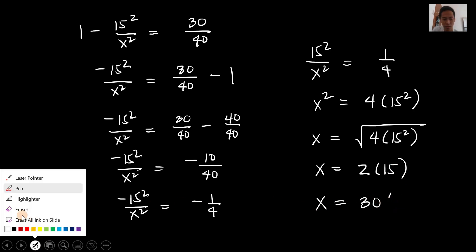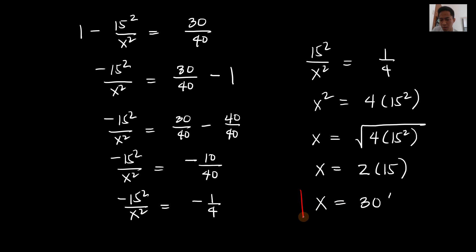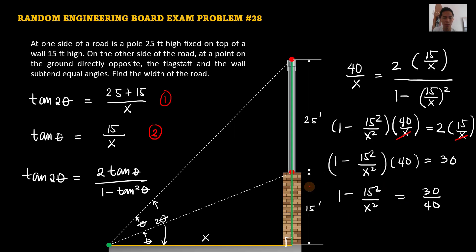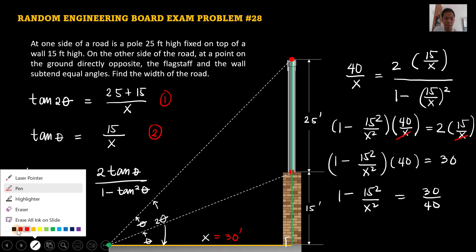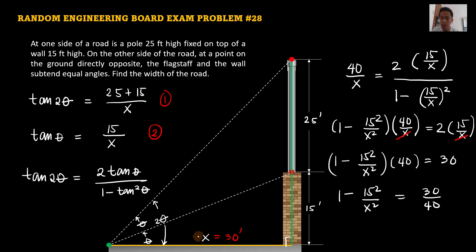So x equals 30 feet. Therefore, the width of the road is 30 feet. If you encounter this past board exam problem in the engineering board examination, you already know how to approach it.